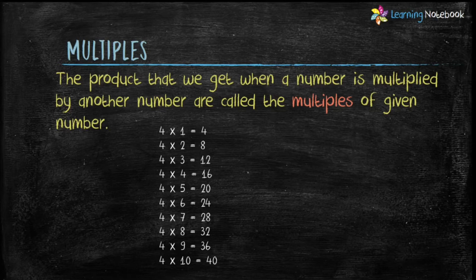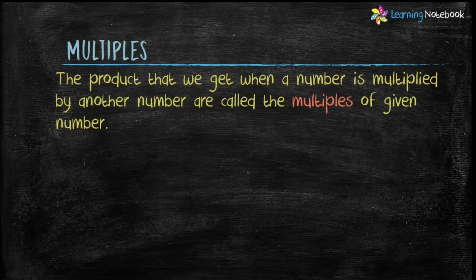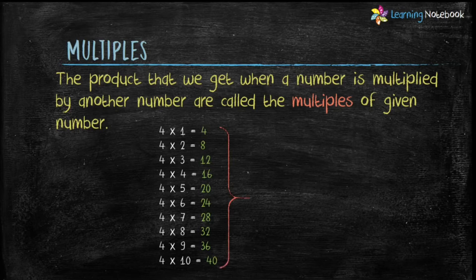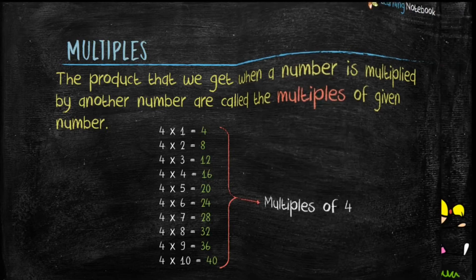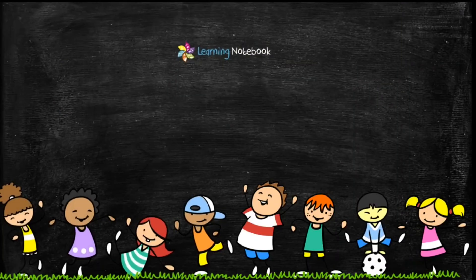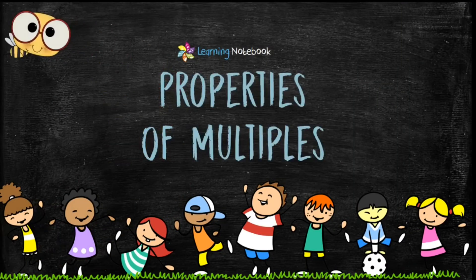So students, the products that we get when a number is multiplied by another number are called the multiples of a given number. Like in the table of four, the products 4, 8, 12, 16, 20 and so on are multiples of four. Now let's understand the properties of multiples.